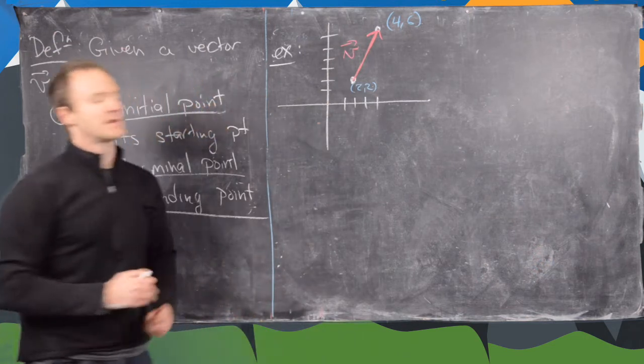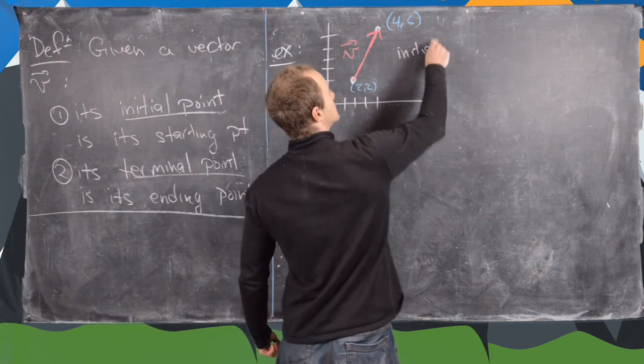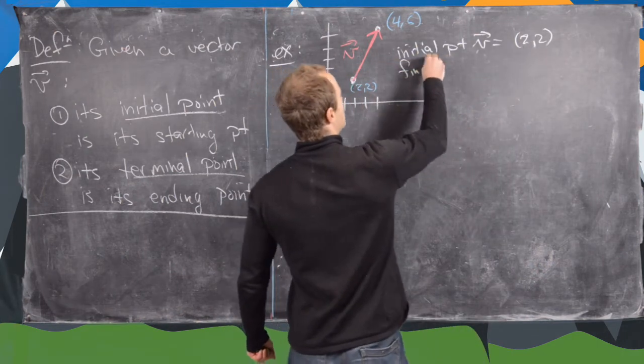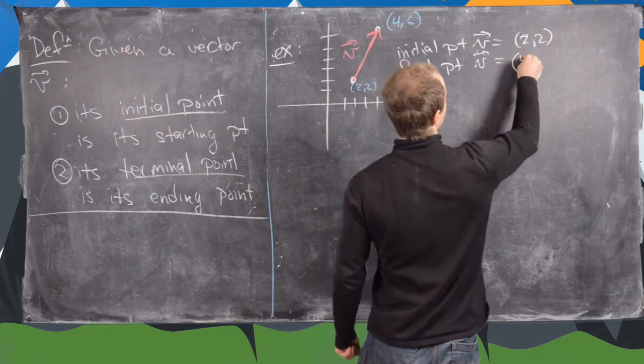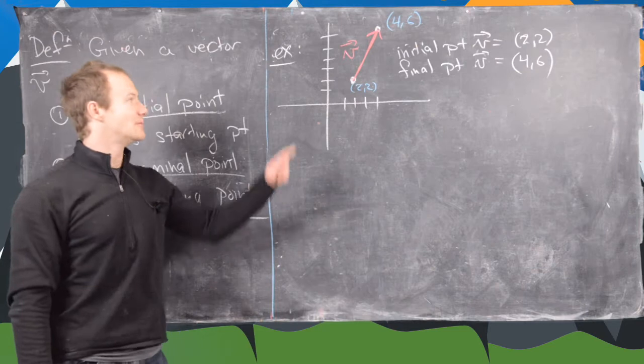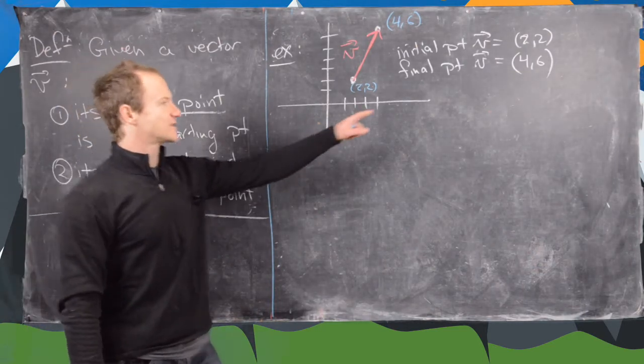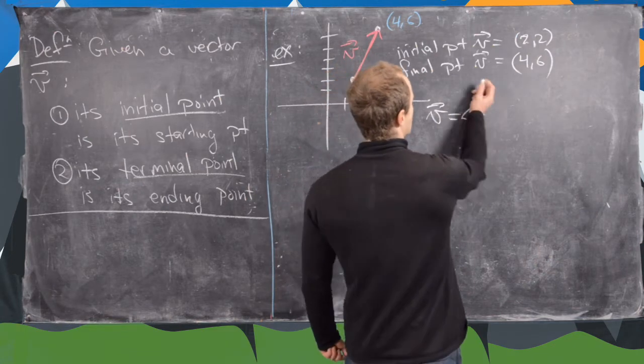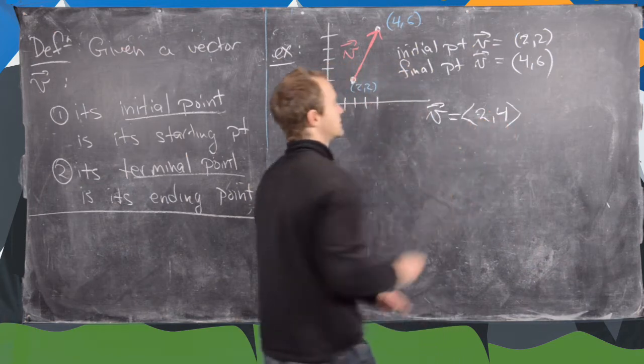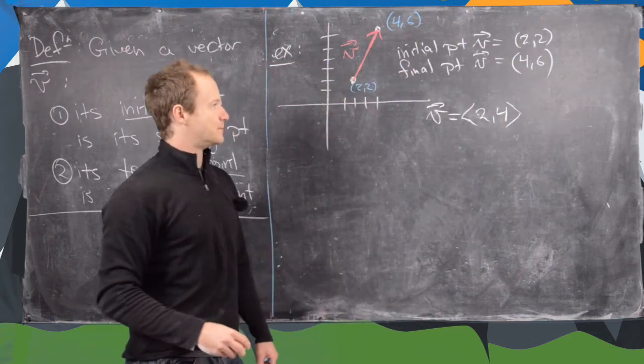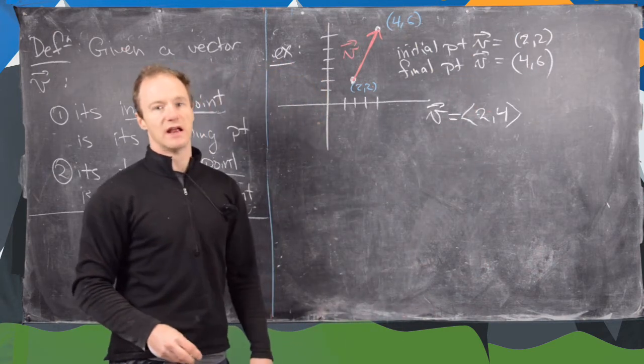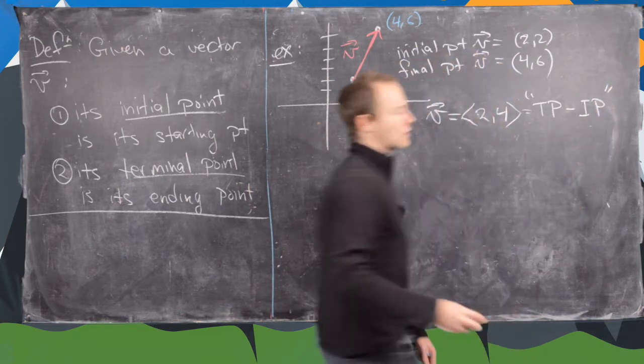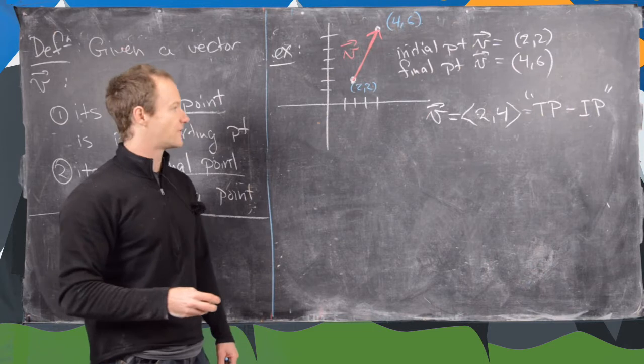We call this maybe V. Notice the initial point of V is given by this coordinate (2,2), and the final point of V is given by this point (4,6). And you might say, what's the vector itself? And the vector itself is like the difference of those two points. So here we can see that the vector V is given by (2,4) because we had two units of motion in the x direction and four units of motion in the y direction. So this is like the terminal point minus the initial point.